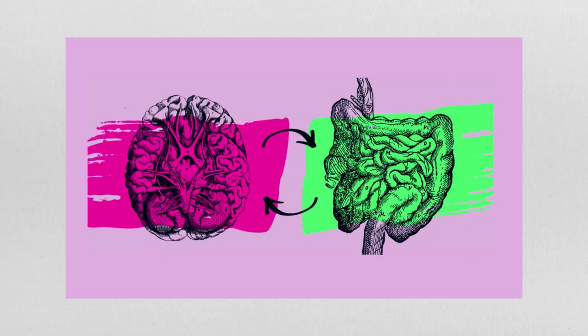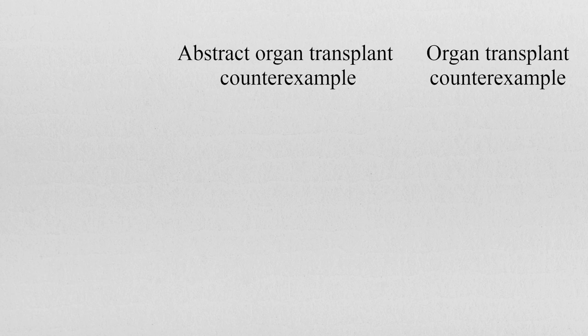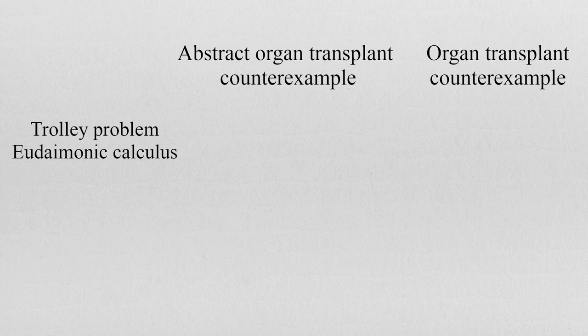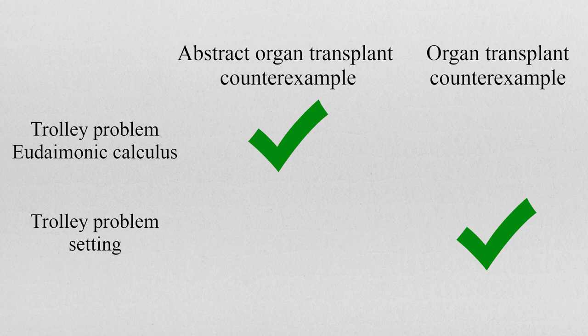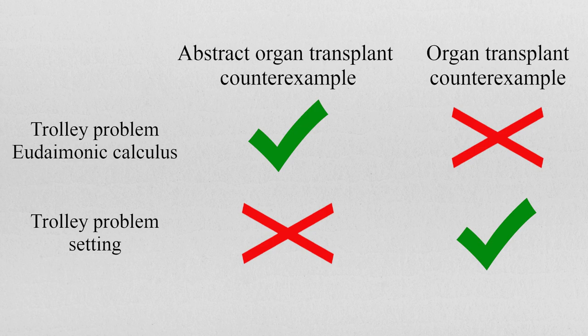Additionally, one might ask: if you take a realistic setting and then remove or tweak some of its components until it resembles the trolley problem, isn't this just a verbal camouflage — just a way of confusing one's moral intuitions? At the end of the day, differentiating between the organ transplant counterexample and the abstract organ transplant counterexample may be quite beneficial to avoid confusion with the trolley problem. The trolley problem has in common with the abstract organ transplant counterexample the eudaimonic calculus, while with the non-abstract organ transplant case it has in common the realism of the setting, but not, as we have seen, the eudaimonic calculus. With this we have a full picture of the difference between the two examples in a simple, act-consequentialist setting.